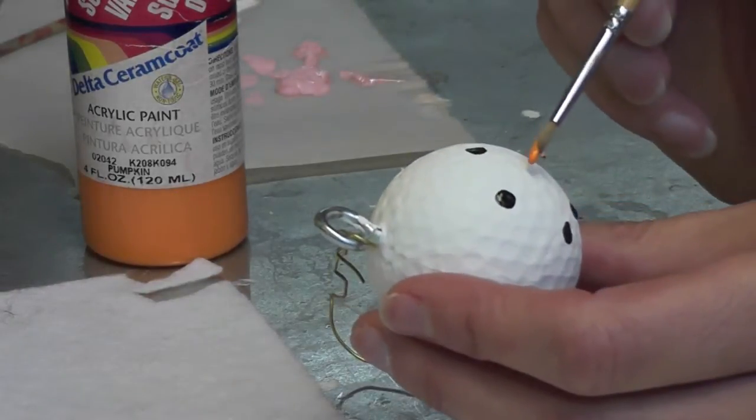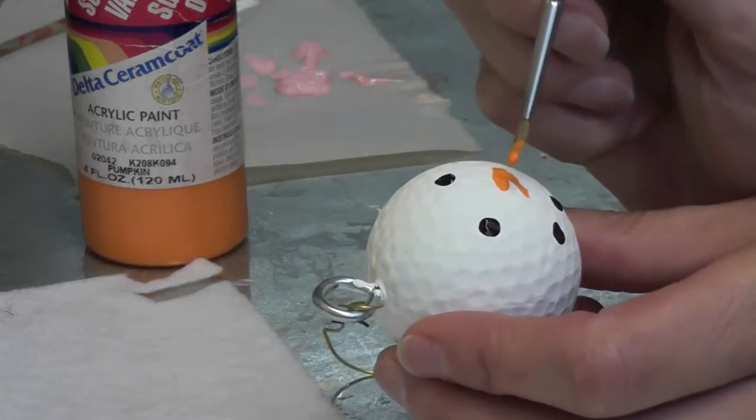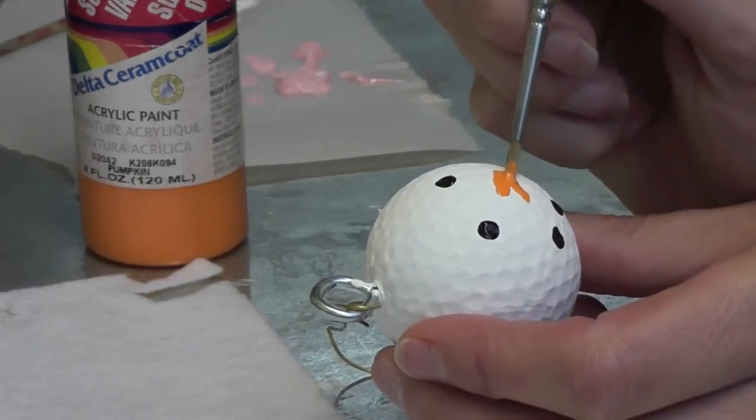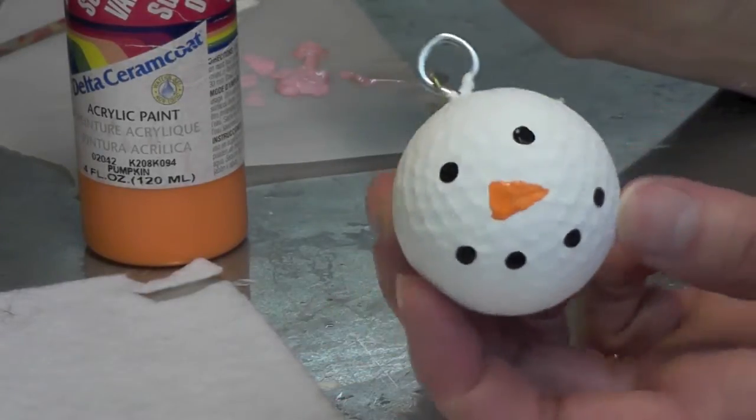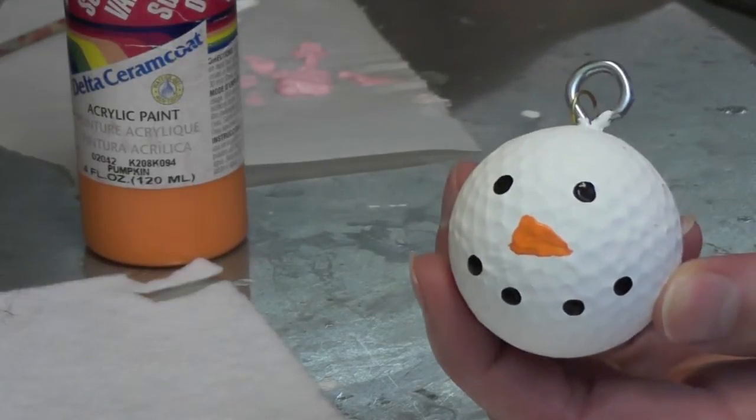Then I'll take the paintbrush and I'm going to paint an orange triangle for a carrot nose. Now you can leave it like that and it looks really cute, but I'm going to take it a little bit further so we'll let that dry.